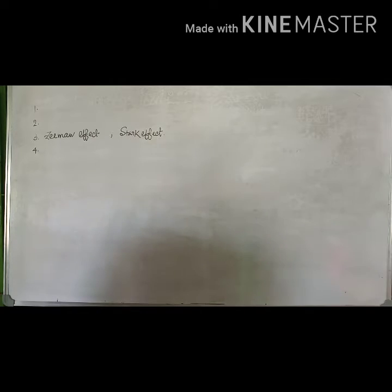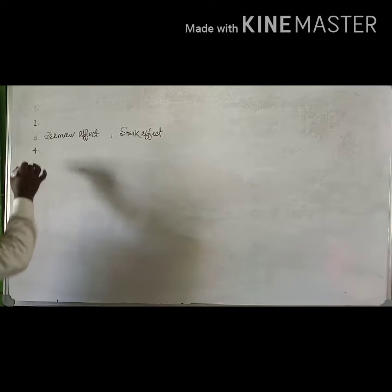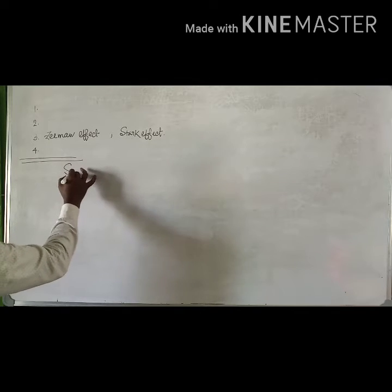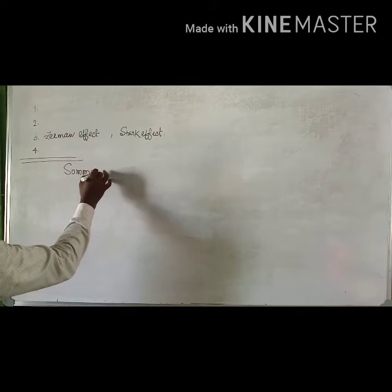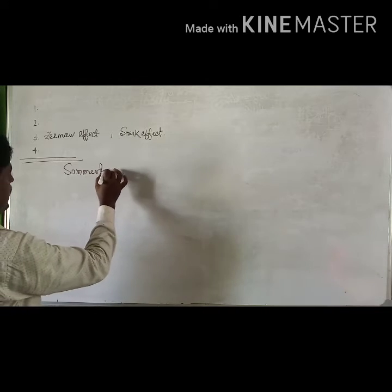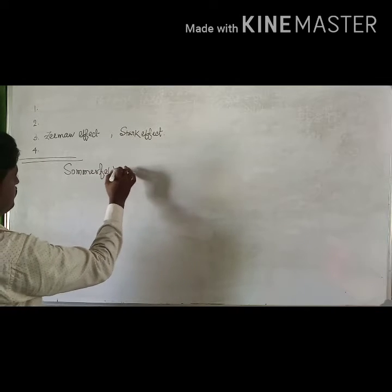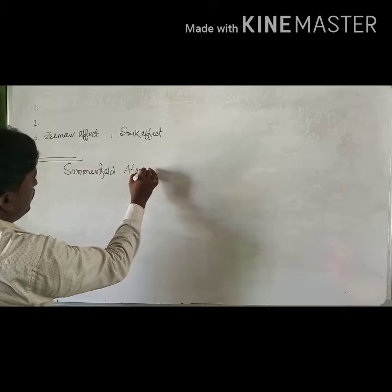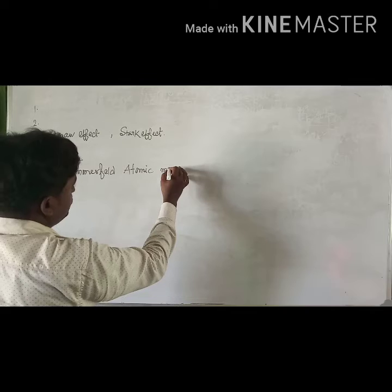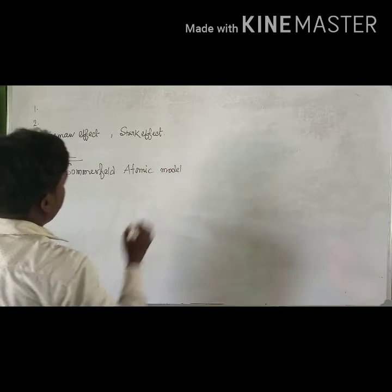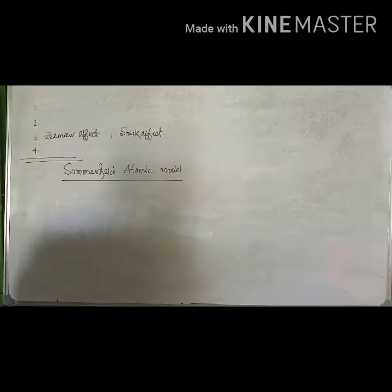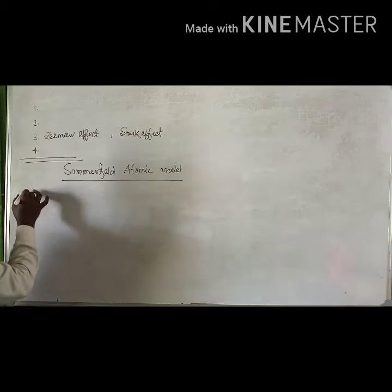Now we read the Sommerfeld atomic model. To explain the fine structure of the spectrum of hydrogen atom, Sommerfeld introduced two main modifications of Bohr's Theory.